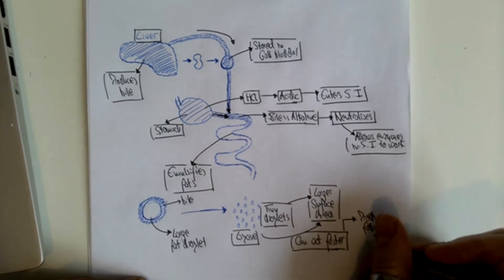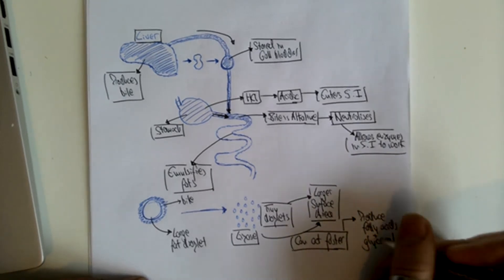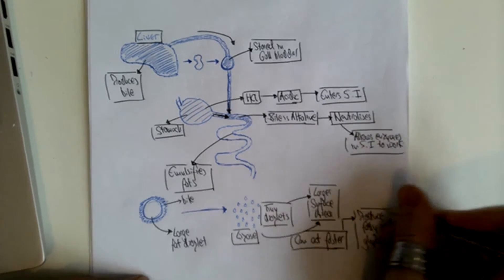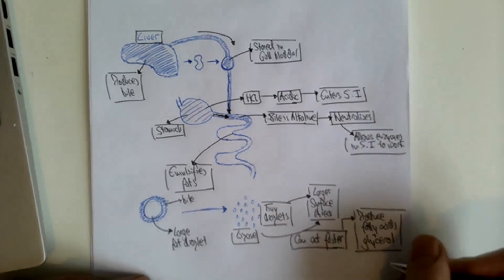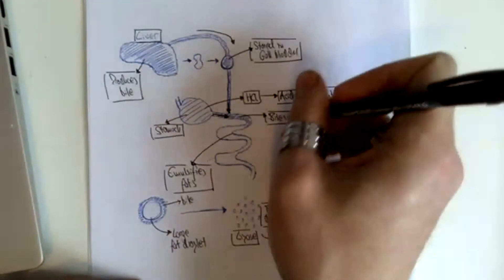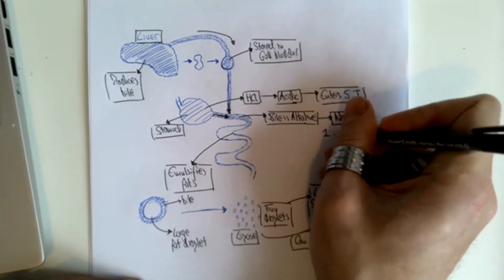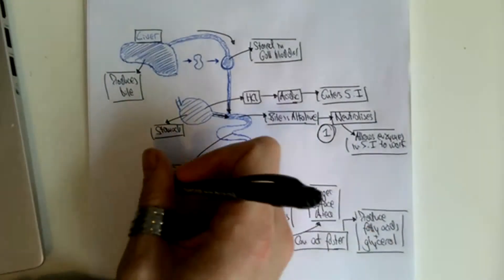And so what we've got there is an overview of the two main purposes of bile. One, to help neutralize stomach acid. And two,